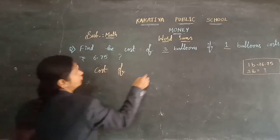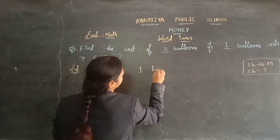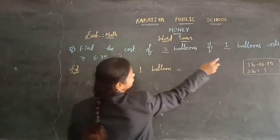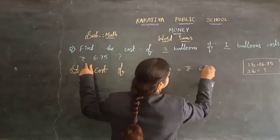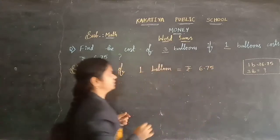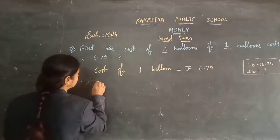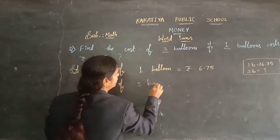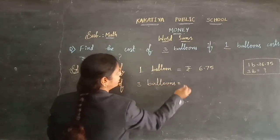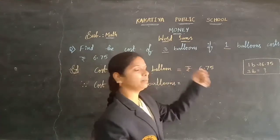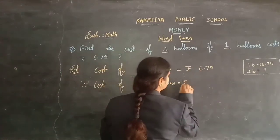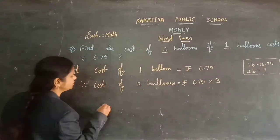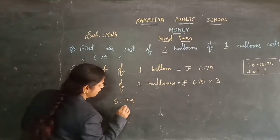Cost of 1 balloon is equal to 6 rupees 75 paise. Now let's find the 3 balloons cost. This is the required statement — cost of 3 balloons. 3 balloons means the 1 balloon amount you need to multiply by 3. So 6 rupees 75 paise, we are multiplying by 3. Let's do the multiplication.